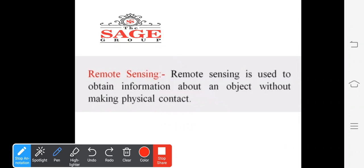Remote sensing and different types of sensors which are used in satellites. Remote sensing is used to obtain information about an object without making physical contact. It is a technology, an art of science, in which we collect information without physically contacting.